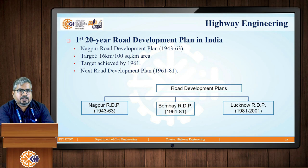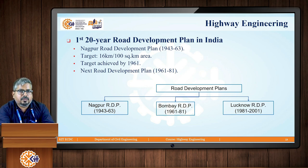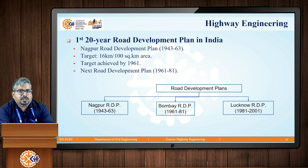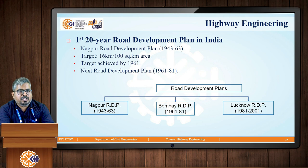The first 20-year road development plan in India was the Nagpur Road Development Plan, which started in 1943 and was planned till 1963. The target road density set for this plan was 16 kilometers per 100 square kilometers of area, and the target was achieved ahead of schedule by the year 1961. Based on this success, the next road development plan was initiated from 1961 to 1981, known as the Bombay Road Development Plan.